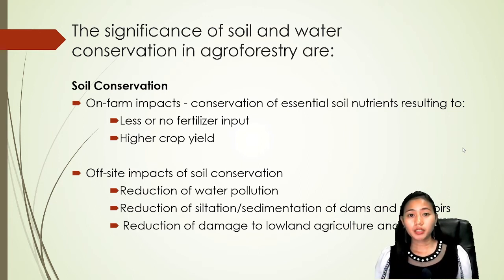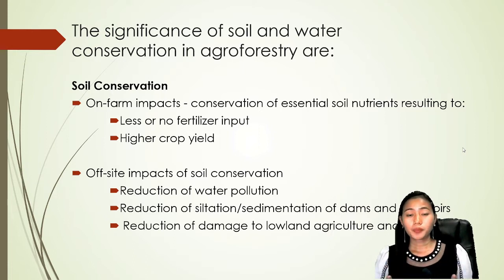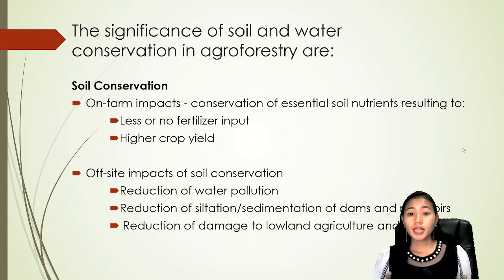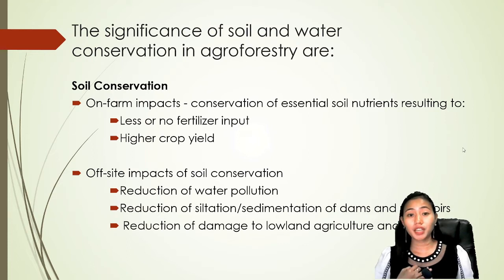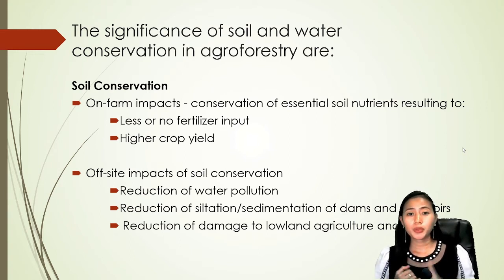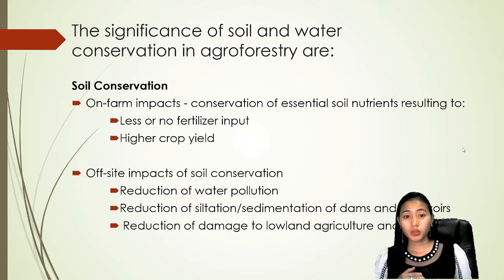Second, higher crop yield. By doing intercropping and multiple cropping, greater production can be achieved in the same area. Off-site impacts of soil conservation include reduction of water pollution, reduction of saltation and sedimentation of dams and reservoirs, and reduction of damage to lowland agriculture and coral reefs. Strategies such as gabions can be used to conserve soil and prevent erosion.